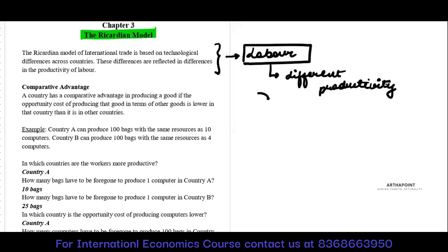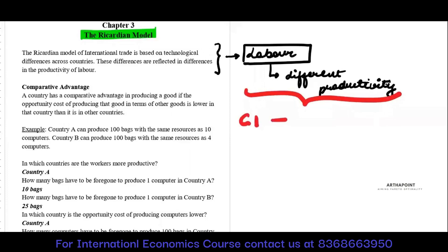In one country, labor can be more productive. In the other country, it can be less productive. This labor productivity can also vary across resources. So maybe in country one, labor is more productive in producing computers. In country two, labor is more productive in producing agricultural products.